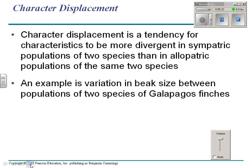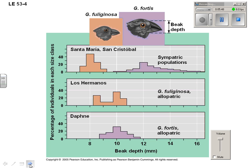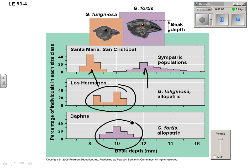Character displacement has to do with evolution. Characteristics are more divergent in sympatric populations than in allopatric ones. If two organisms live together, their characters — like beak size — are very different between species. For example, in this finch, where they live together, there's a big difference in beak size between the two species. But when they're apart — the allopatric populations — look at the difference in beak depth for fortis when it's not living in the same place as fuliginosa.